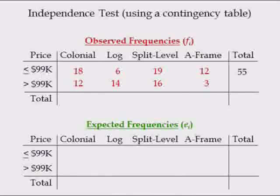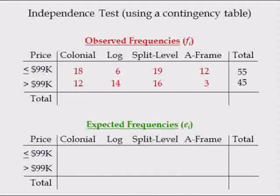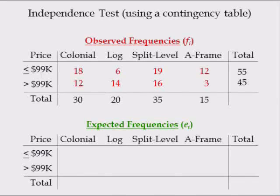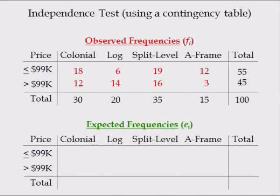The total in row 1 is equal to 55. The total in row 2 is equal to 45. The total in column 1 is equal to 30, column 2 is 20, column 3 is 35, and column 4 is 15. The total number of homes sold by Finger Lakes is 100.